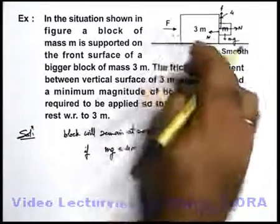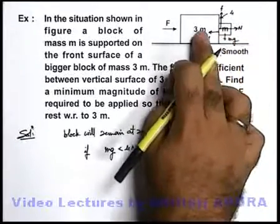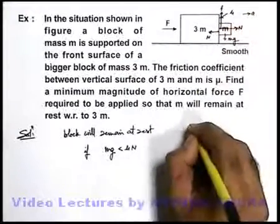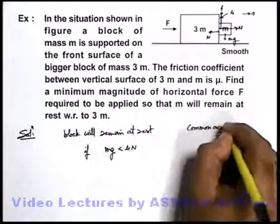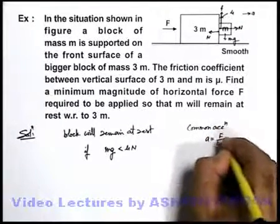...as it is given that small m is at rest with respect to 3m, they will have a common acceleration a. And in this situation, the common acceleration of blocks can be written as F upon 4m.